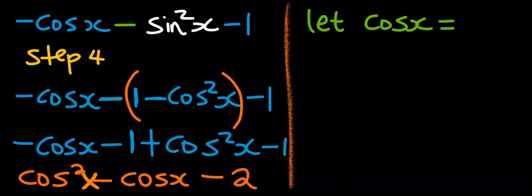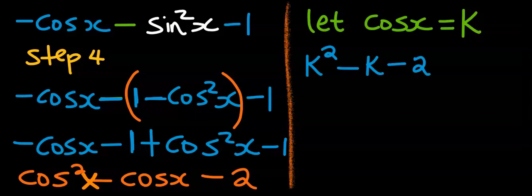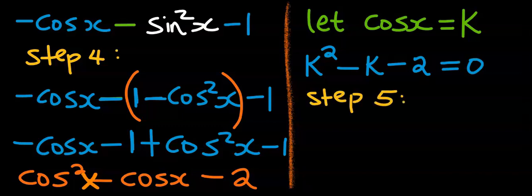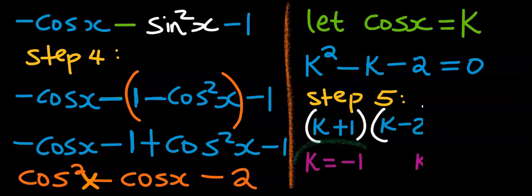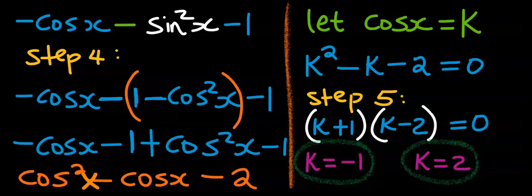Rearrange the function. Let cos x be k. Then we can say k squared minus k minus 2. And here we can say let it be equal to 0. And this is quadratic equation. Step number 5. By factorization method of quadratic equation, we got k is equal to minus 1 and k is equal to 2. Which is same as saying cos x is equal to minus 1 or cos x is equal to 2.